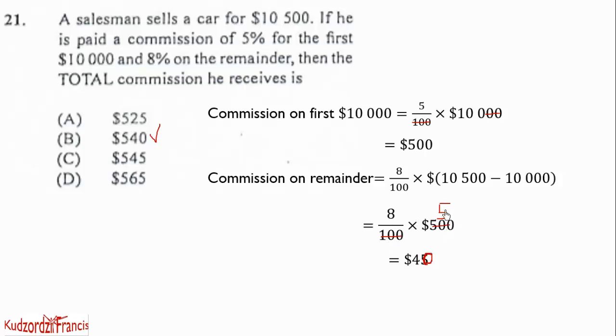So $100 will go into $500 five times, and 5 times 8 will give us $40. Now we add the $40 to the $500, which will give us $540. So this is supposed to be $540. I did a mistake and the answer to it is there, which means you need to be very careful.